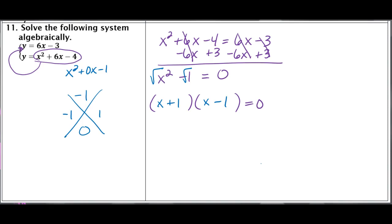All right, so we are factored. The next thing I would do is set each factor equal to zero. So I'd have x plus 1 equals zero, x minus 1 equals zero. And I'm going to subtract 1 from both sides. So I would have x equals negative 1.